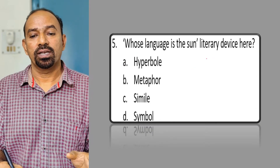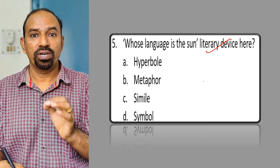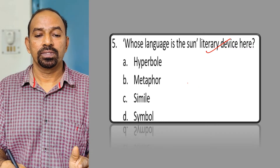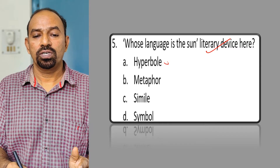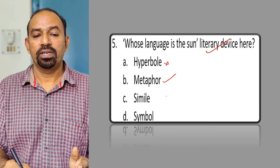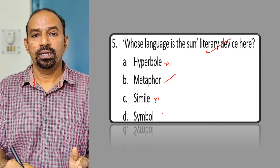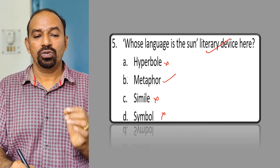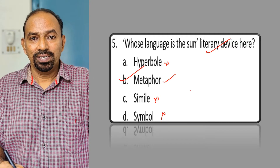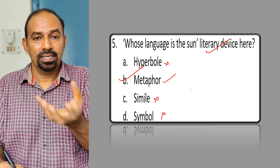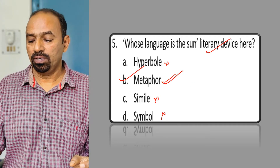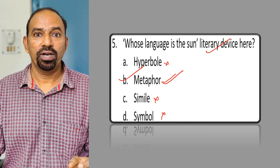Question five: Identify the literary device in 'whose language is the sun'. It is not hyperbole, not simile, not symbol. Language is said to be the sun — that is a metaphor, comparing without using 'like' or 'as'. So metaphor is the poetic device used here.